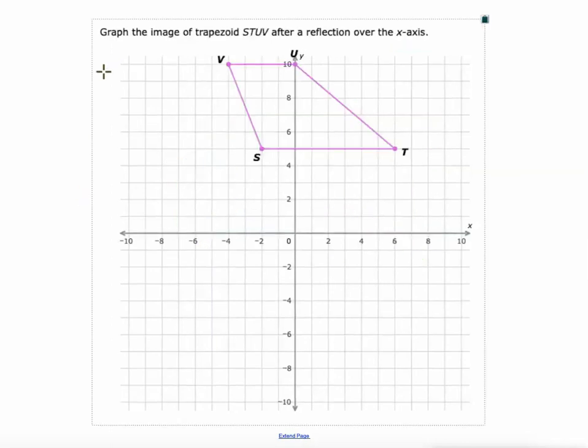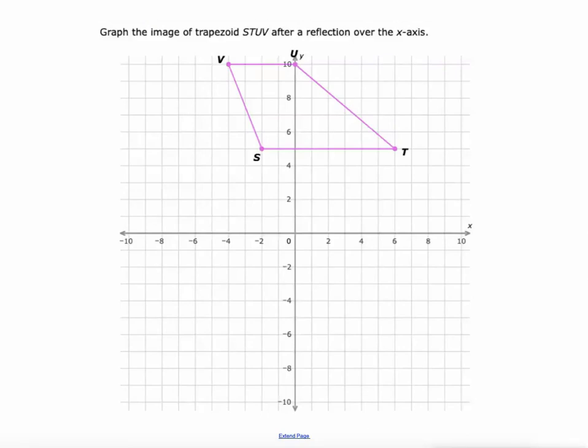One more. We're going to reflect this one over the x-axis. So over the x-axis, which is this horizontal axis here. So s is at 5. Go straight down. We'll plot it at negative 5. So there's s prime.